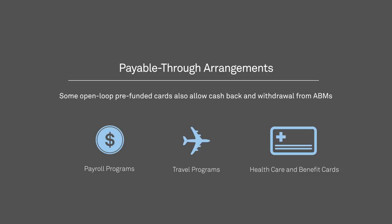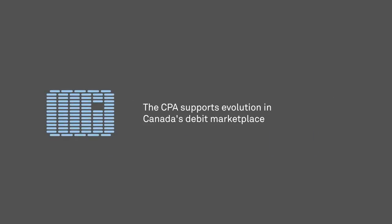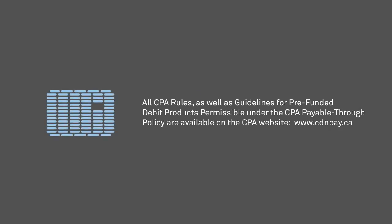Some open-loop pre-funded cards also allow cardholders to get cash back as part of a retail purchase and to withdraw cash from ABMs in participating networks. It's important to know that the CPA supports evolution in Canada's debit marketplace. To help explain how our rules and policies work, we've named specific products and scheme operators such as Interac, but we take a device-neutral approach in the development of our policies, rules, and standards. This leaves the door open for financial institutions to establish relationships with new payment scheme operators and offer new products and services to their clients. All CPA rules, as well as the guidelines for pre-funded debit products permissible under the CPA's Payable Through Policy, are publicly available on the CPA website www.cdnpay.ca.